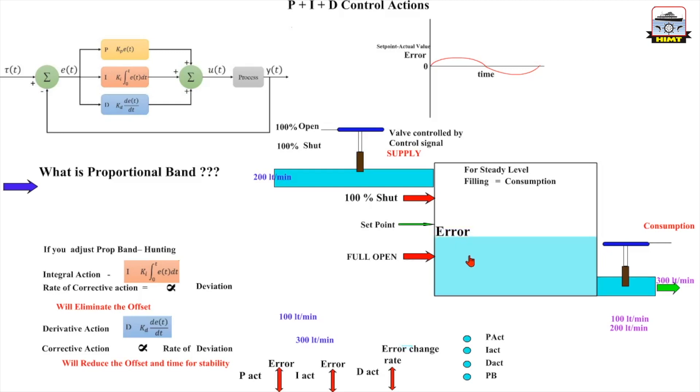The level will settle here because it was predictive in nature. And the integral action will put it back to the set point because it will remove the offset.